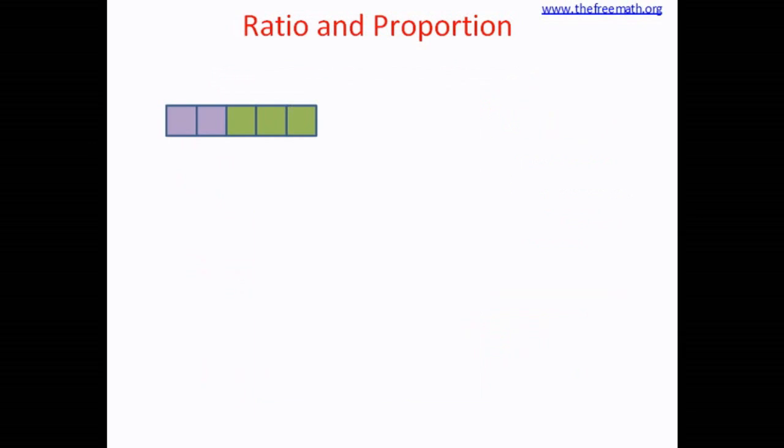Now let's look at this stripe again. What we did before is we compared the purple squares to the green squares and we said the ratio is 2 to 3. This kind of ratio is called part with part. That means I am comparing one part to another part, which is 2 to 3. I can also compare the purple part with the whole stripe. That means I can say that the ratio of purple part to the whole stripe is 2 to 5. That means there are two types of ratios: part to part and part to whole.